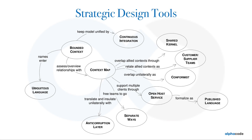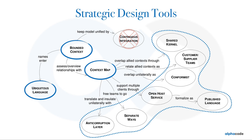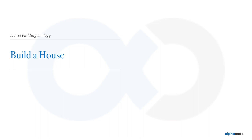Now let's talk about the strategic design tools. This figure might look overwhelming, but it's a complicated figure for a very simple concept. We are not going to talk about continuous integration right now — that will be covered in upcoming lessons. The three most important concepts are bounded context, context map, and ubiquitous language. Everything else on the right side of the figure is just part of the context map.